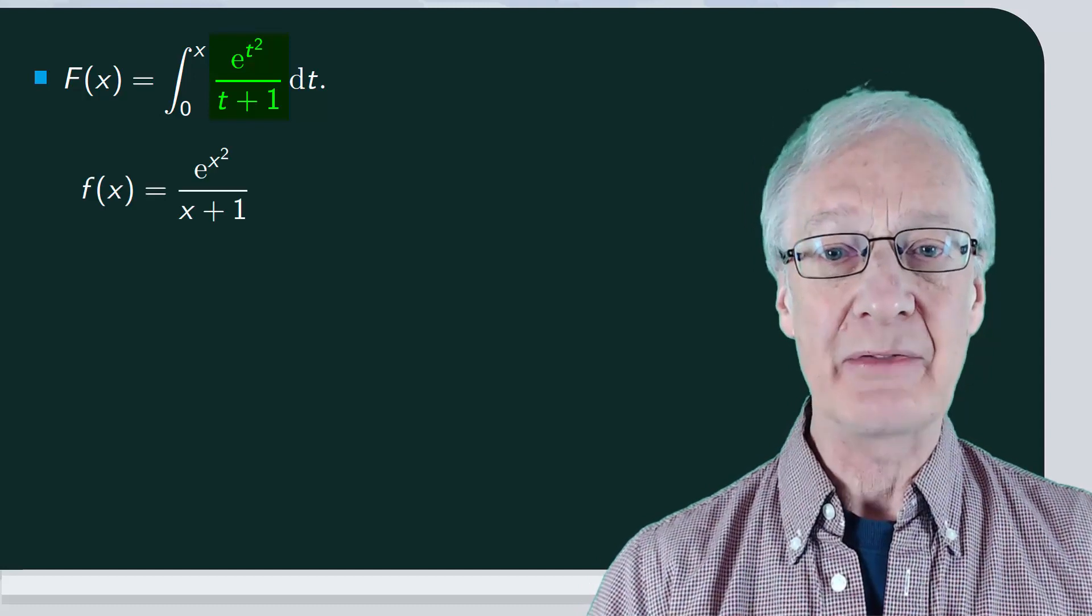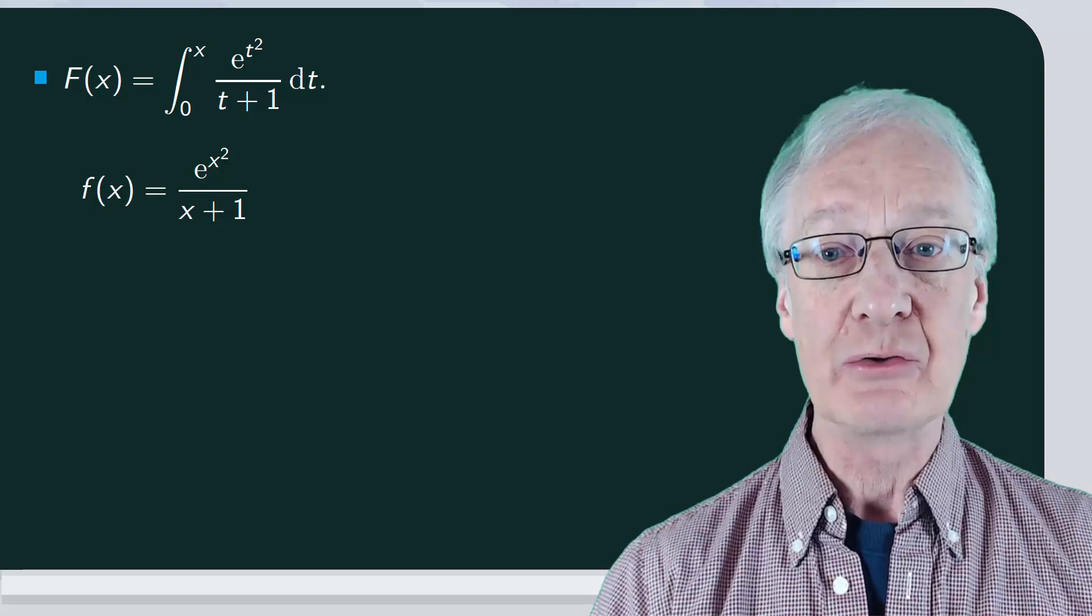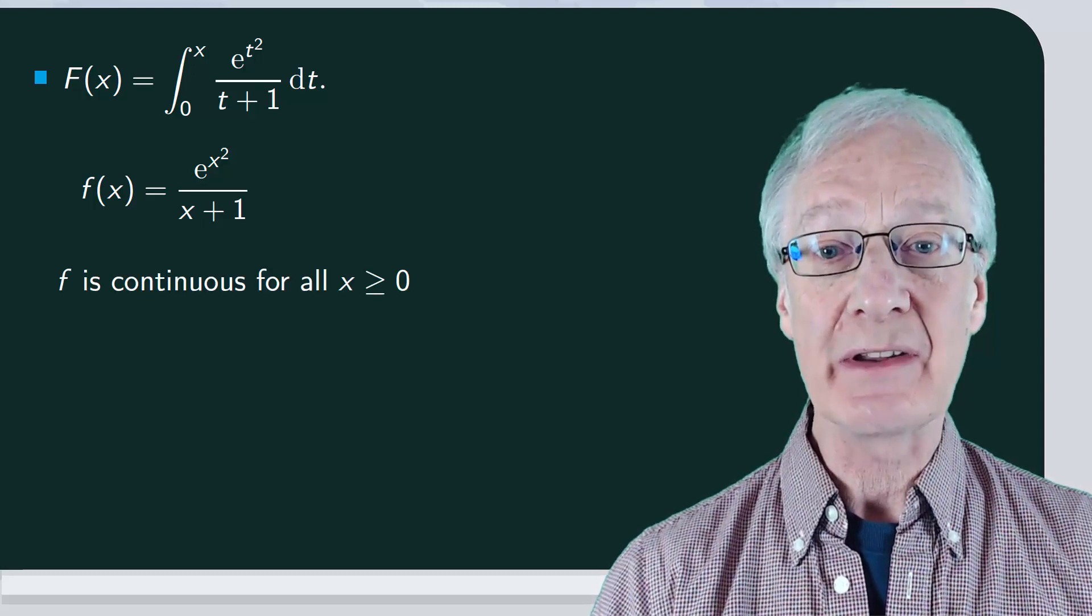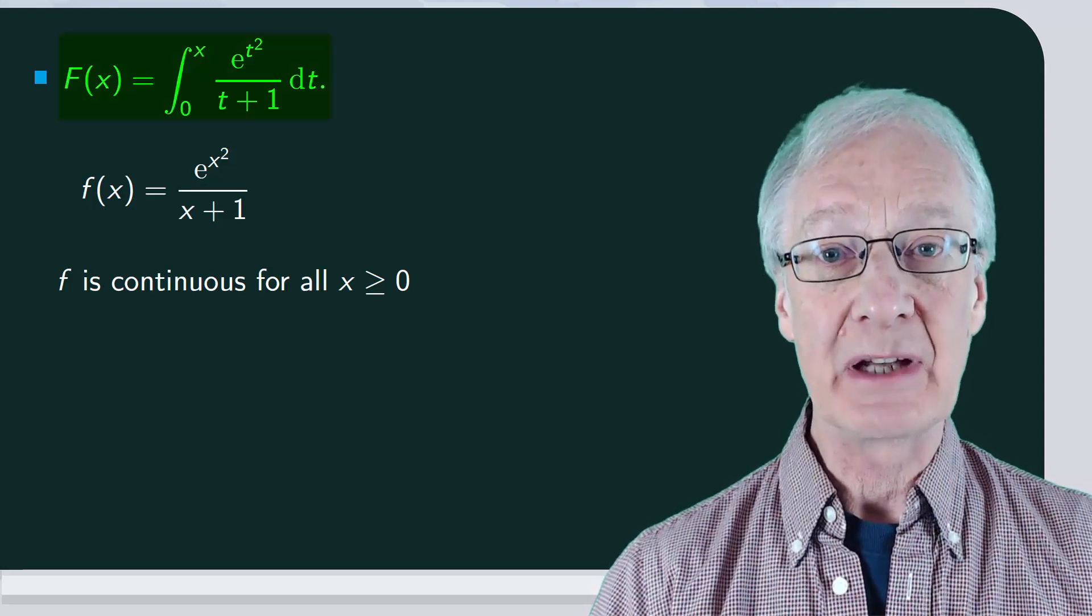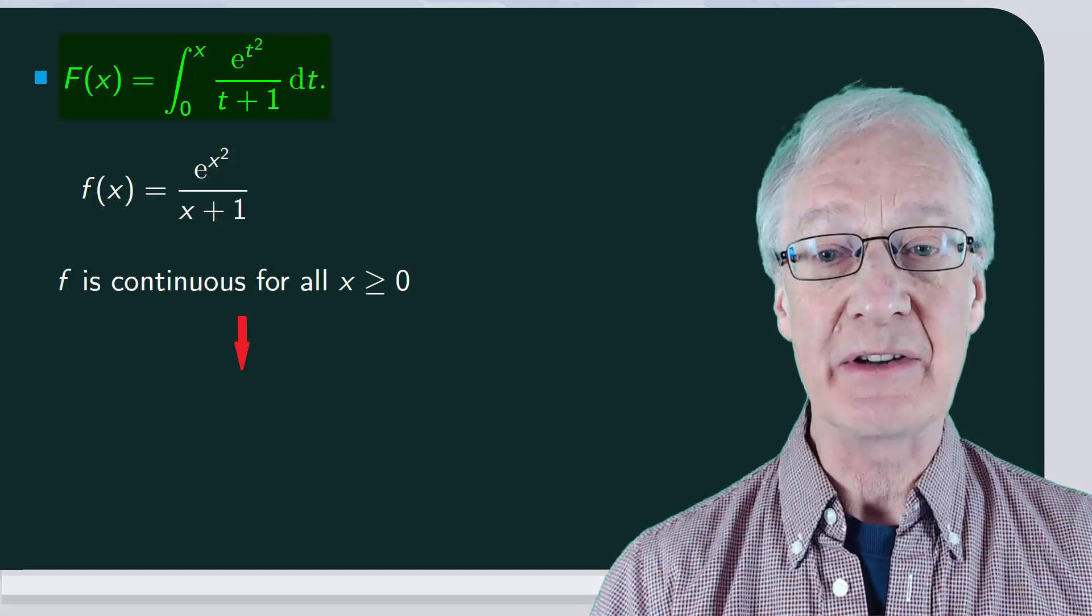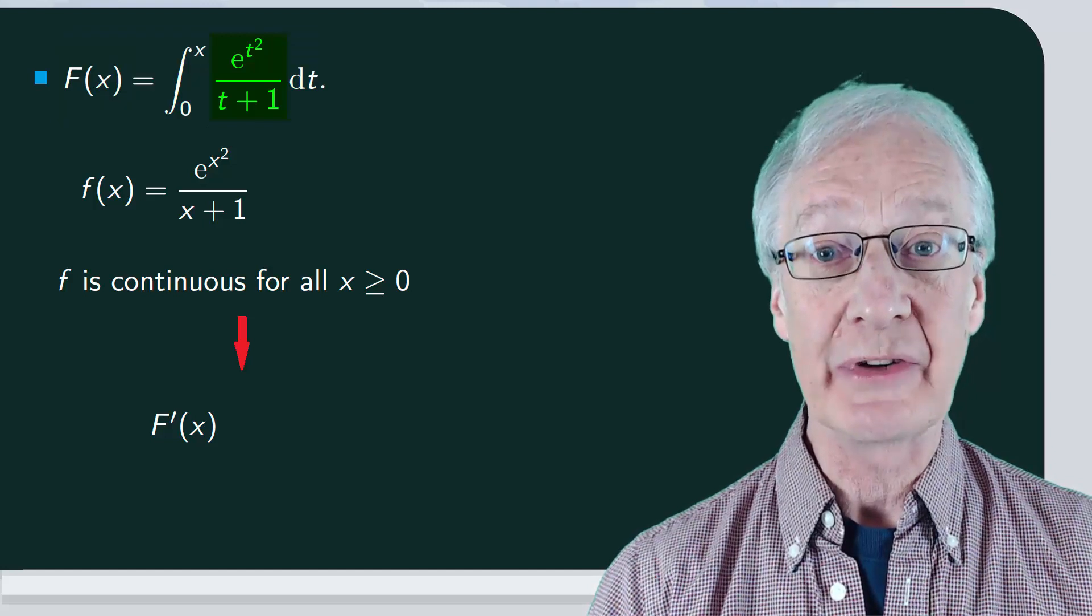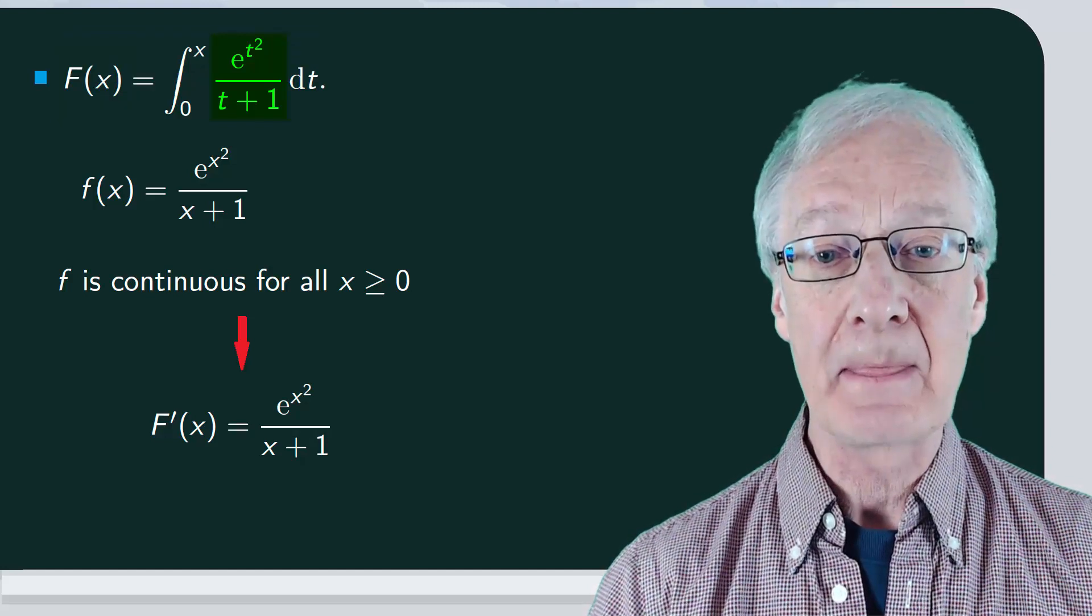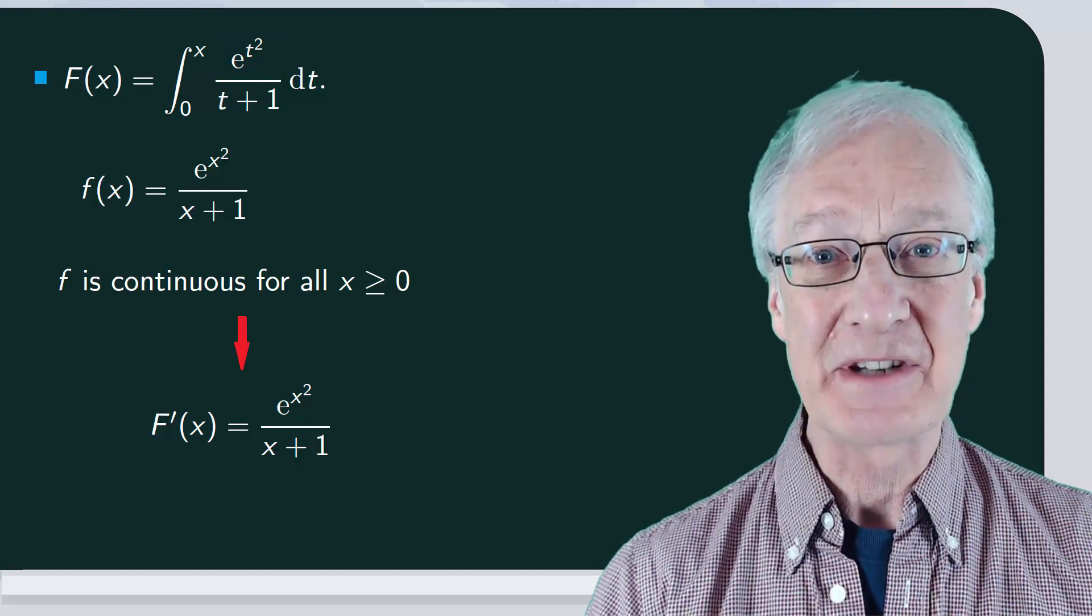If we put f of x equal to e to the x squared over x plus 1, notice that this function is continuous for any x greater than or equal to 0. Then applying the fundamental theorem of calculus, we have that capital F is differentiable and so f prime of x is equal to what's inside the integral, namely e to the x squared over x plus 1. And we're finished. Simple, right?